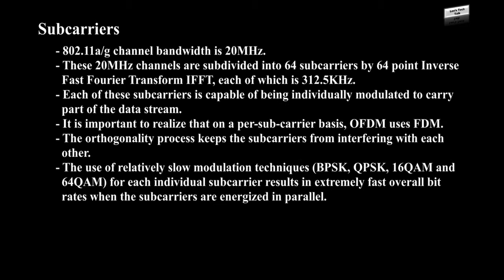Subcarriers: 802.11a/g channel bandwidth is 20 MHz. These 20 MHz channels are subdivided into 64 subcarriers by a 64-point Inverse Fast Fourier Transform, IFFT, each of which is 312.5 kHz. Each of these subcarriers is capable of being individually modulated to carry part of the data stream. It is important to realize that on a per-subcarrier basis, OFDM uses FDM. The orthogonality process keeps the subcarriers from interfering with each other.